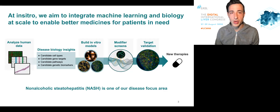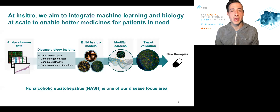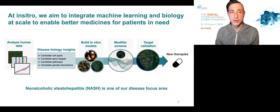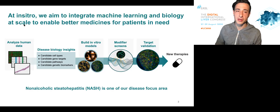At Insitro, we aim to integrate machine learning and biology at scale to enable better medicines for patients in need. This slide provides a high-level overview of how Insitro's pipeline looks. We start by analyzing human-level data, and from these analyses we can learn insights into the biology of a disease.